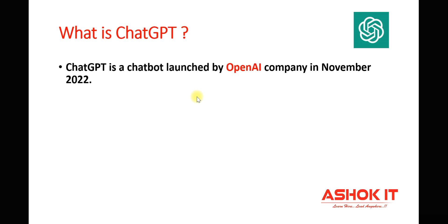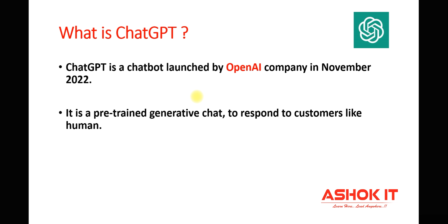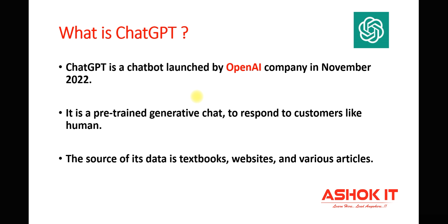ChatGPT is pre-trained software. OpenAI collected data available across several websites, textbooks, and articles, and used that data to train ChatGPT. It is an artificial intelligence software, so whenever you ask anything, ChatGPT will provide the response to you in text format.